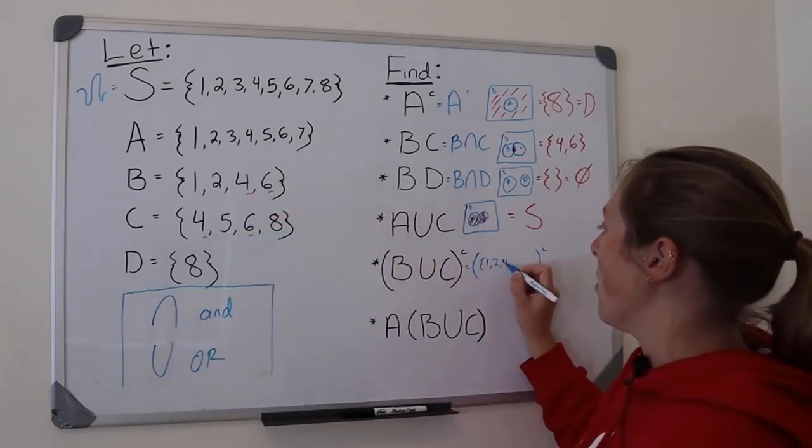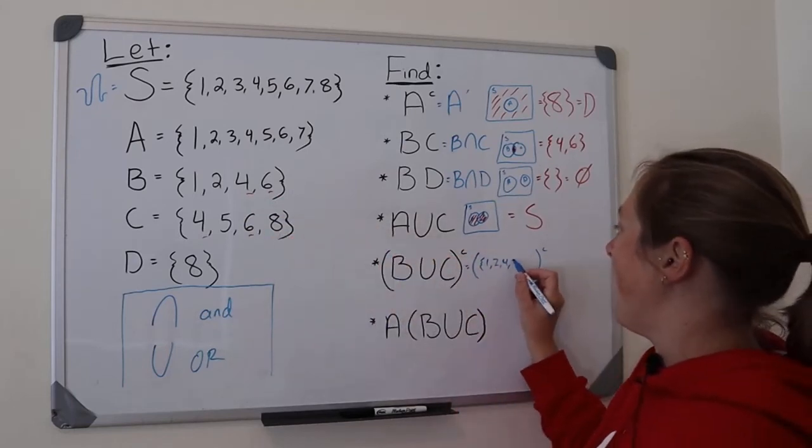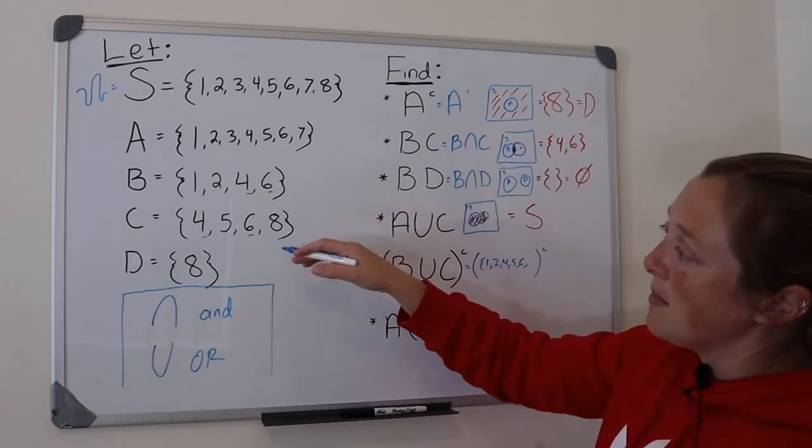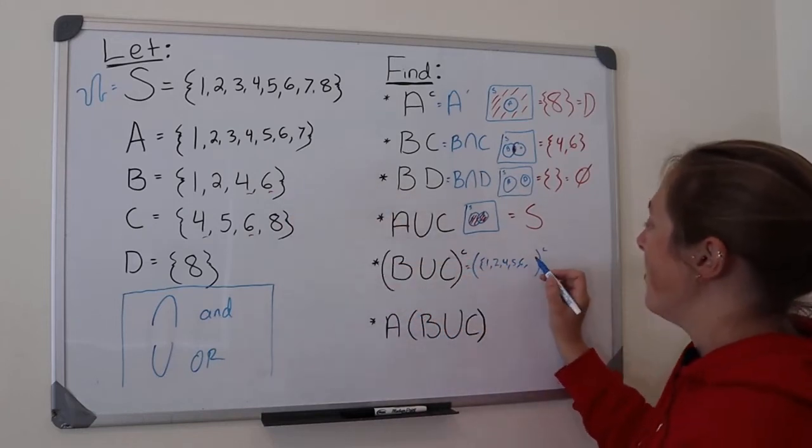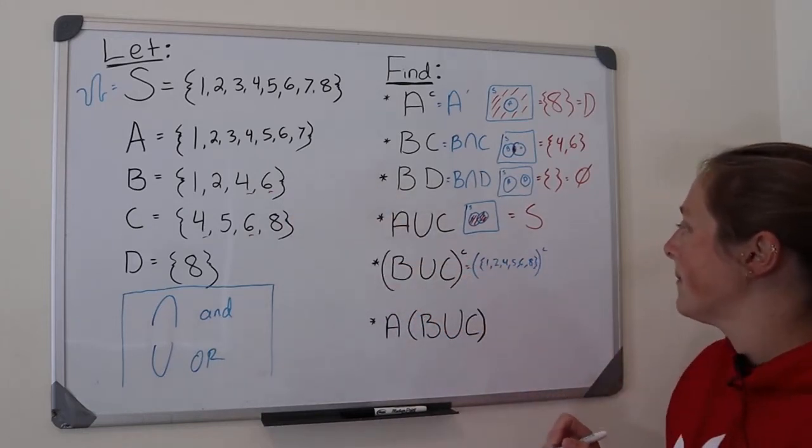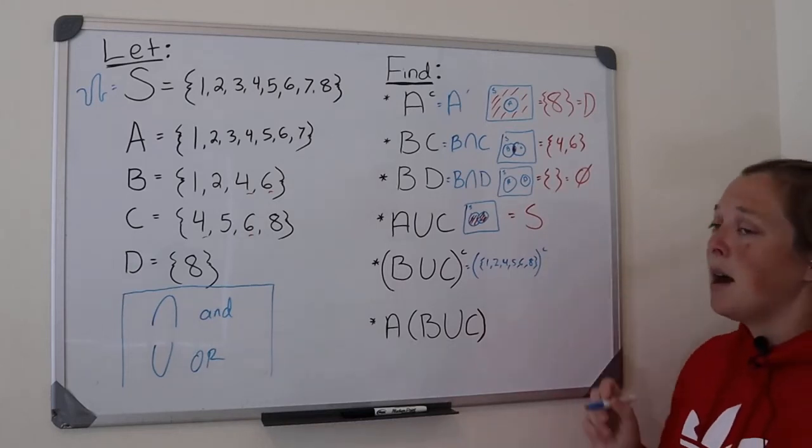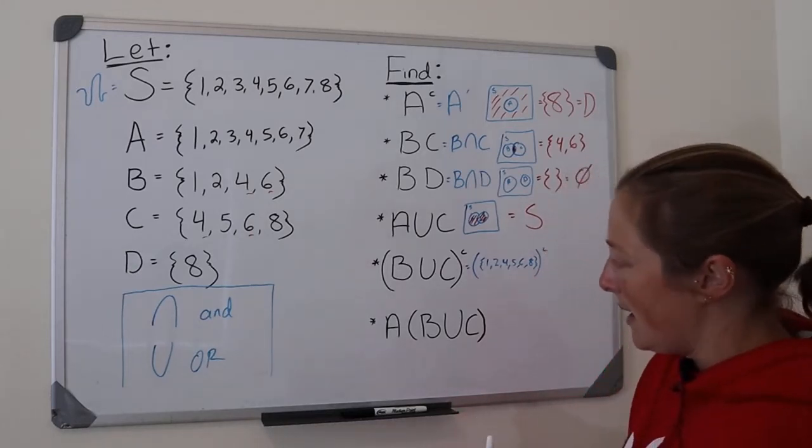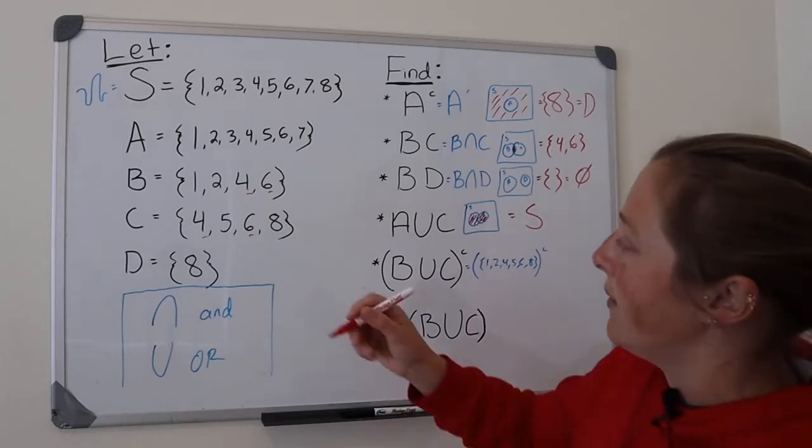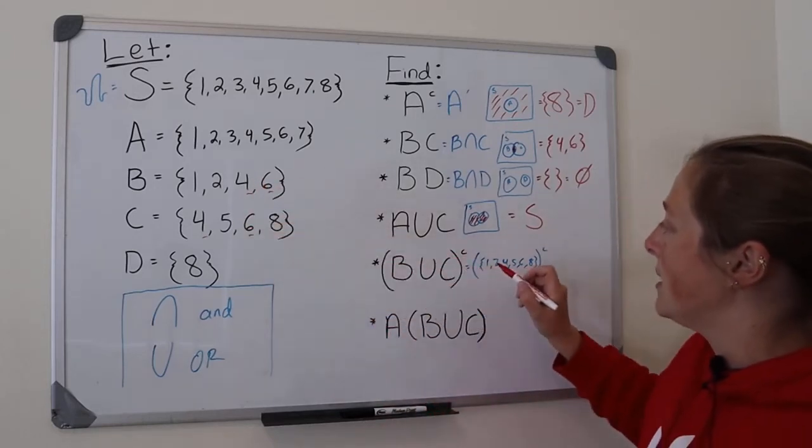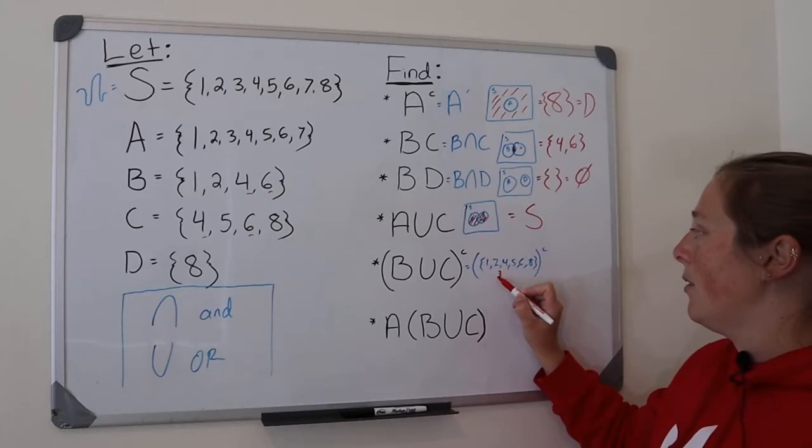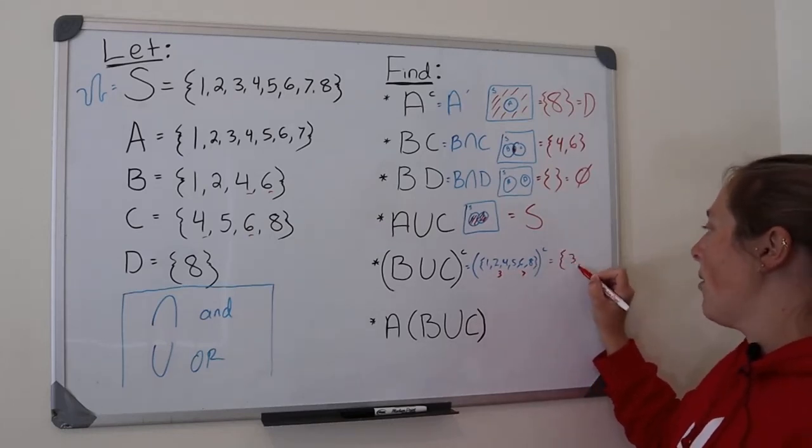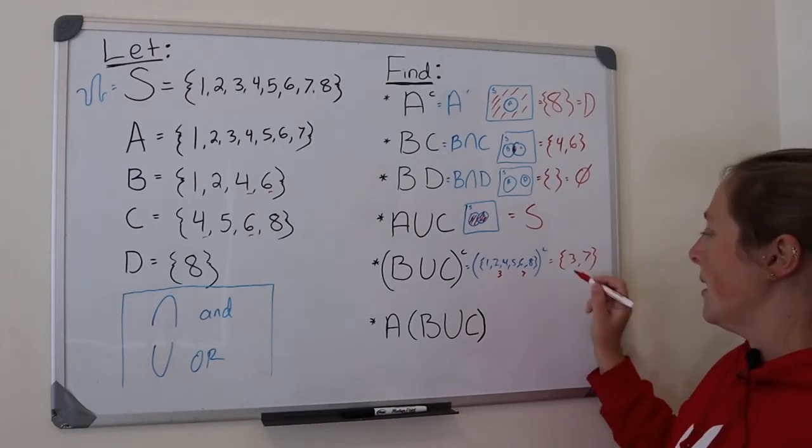So I have one, two. Notice that three is not in B or C. Next I have four. I have five. I have six. There is no seven in B or C. But then lastly, I have eight. So basically now the complement is everything that's not in there. What's not in here? I'm missing three and I'm missing seven. So the complement would be three and seven. And that's my answer.